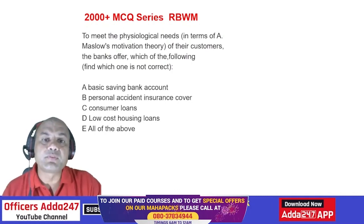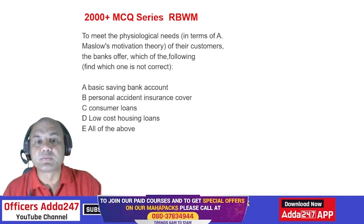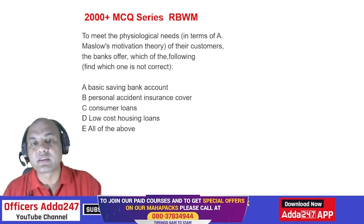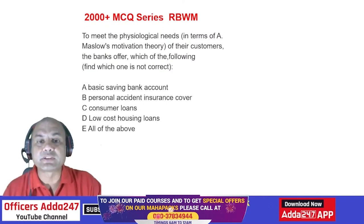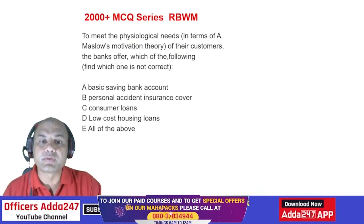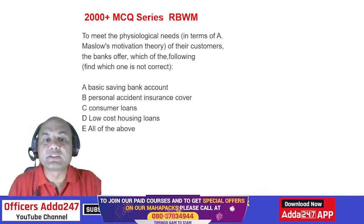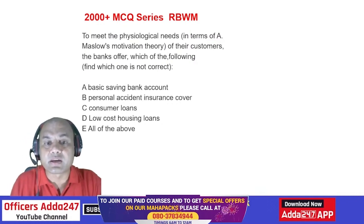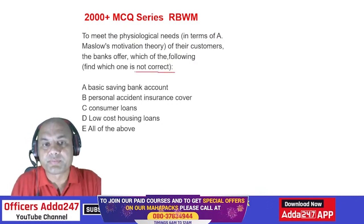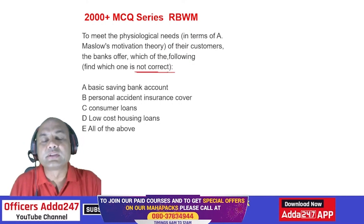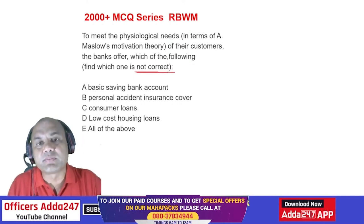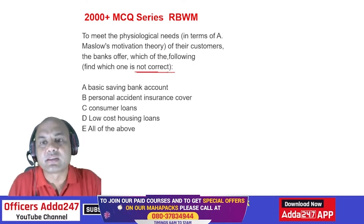To meet the physiological needs in terms of Maslow's motivation theory of their customers, banks offer which of the following? Find which one is NOT correct. First, understand Maslow's theory — it's a typical triangle.